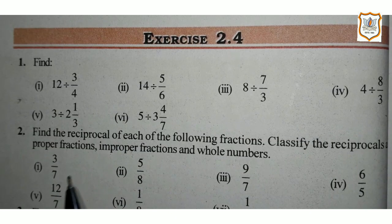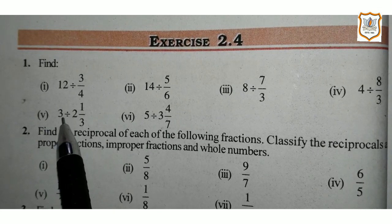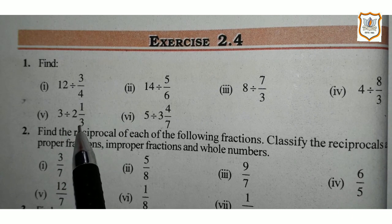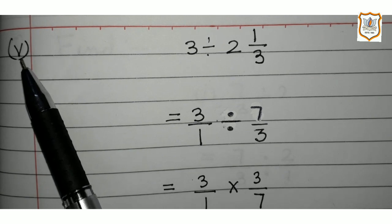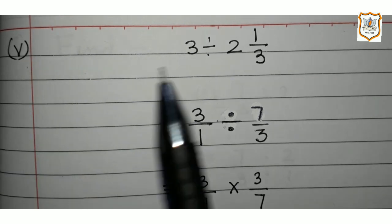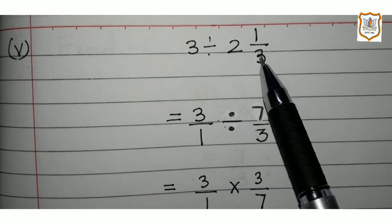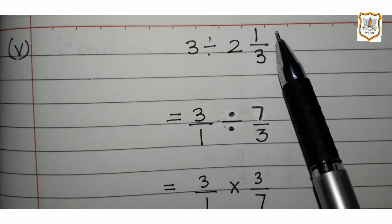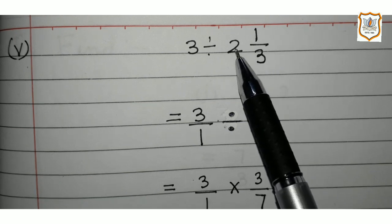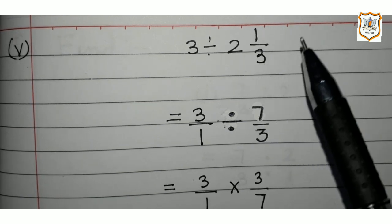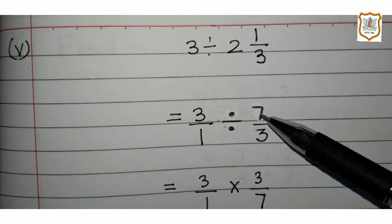Now I will solve part 5 of question number 1. Part 5 is 3 divided by 2 integer 1 upon 3. Let's solve question number 1 of exercise 2.4, that is 3 divided by 2 and 1 upon 3. Students, first we will convert this mixed fraction into an improper fraction. For that, 3 times 2 is 6, and 6 plus 1 is equal to 7 upon 3. So, we have 3 upon 1 divided by 7 upon 3.